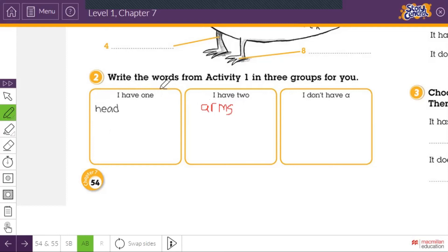I will give you a clue. In one, I have one, you have three answers. One is already answered, head. And here you have four, four answers. And here you have one answer. Find it. Find what makes you different and what is the same with the words from activity one.